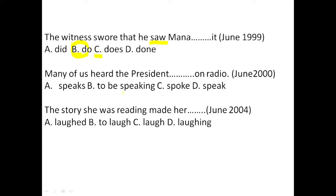Next: many of us heard the president dash on radio. The key component is heard — the past tense of hear. Heard is one kind of verb that attracts bare infinitive. The verb coming supposed to be in bare infinitive state — no s, no -ing, no past tense. Options: A: speaks — wrong, has s. B: to be speaking — wrong, has to and -ing. C: spoke — wrong, past tense. D: speak — correct. Our answer is option D: speak. Many of us heard the president speak on radio.